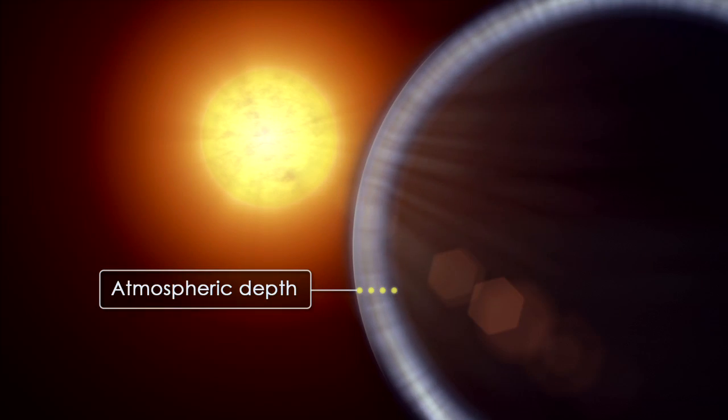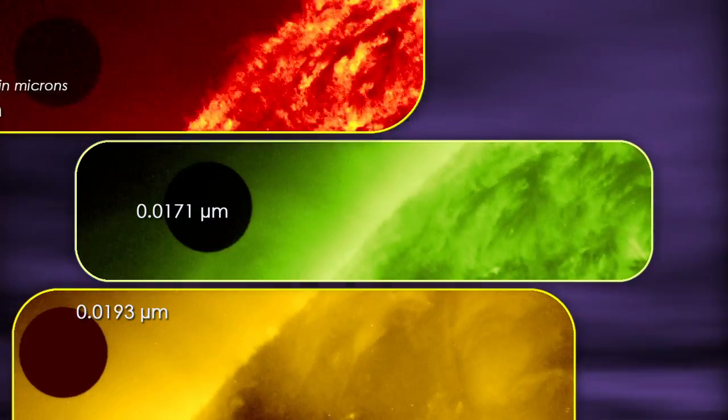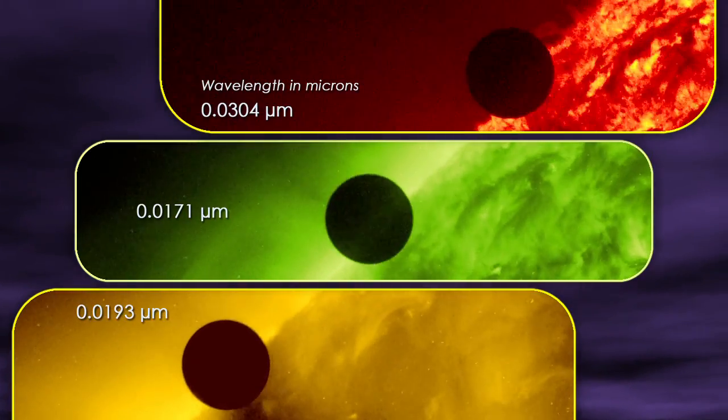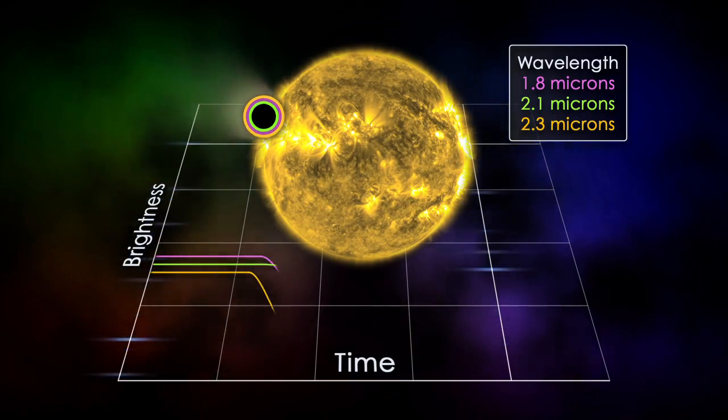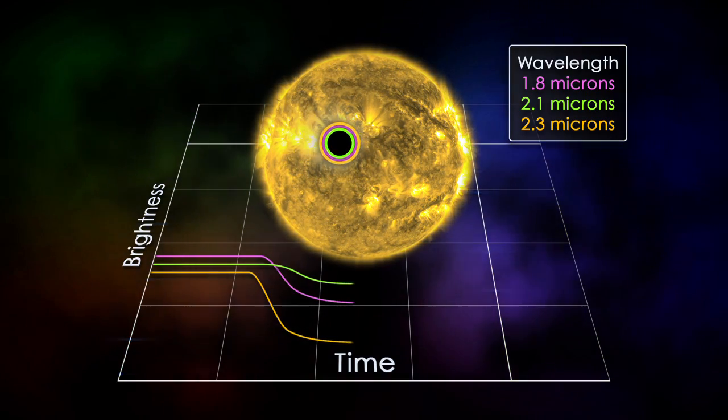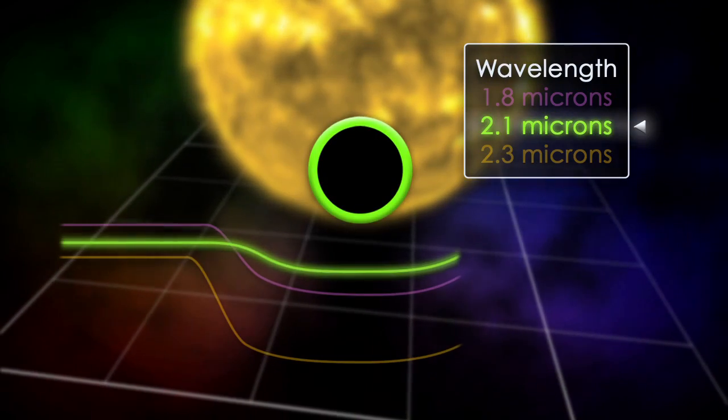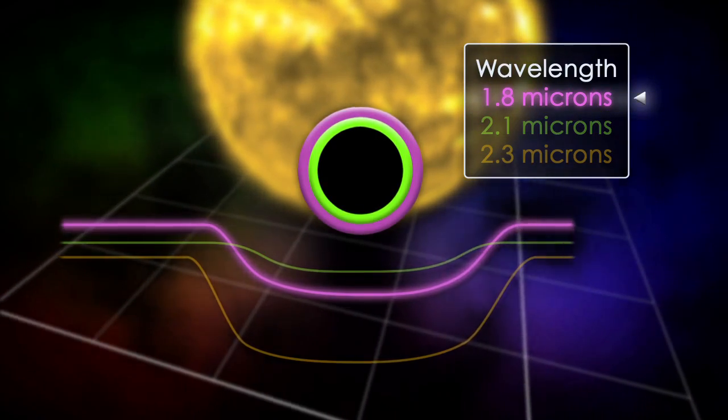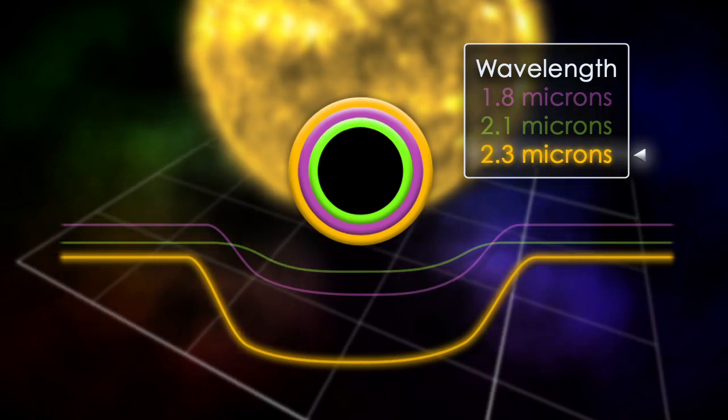Knowing the depth and density of the atmosphere is also important. To figure this out, astronomers observe the transit at many different wavelengths. At wavelengths where more absorption occurs, the planet will appear larger, with a change in size indicating how deeply the atmosphere extends, and its density at different altitudes.